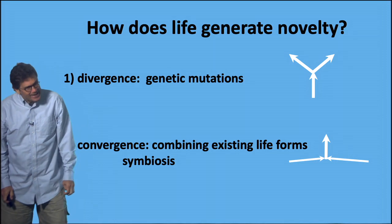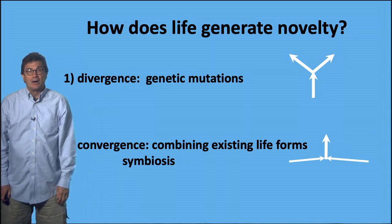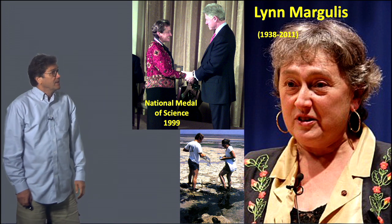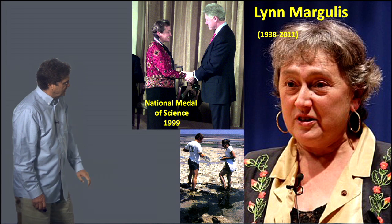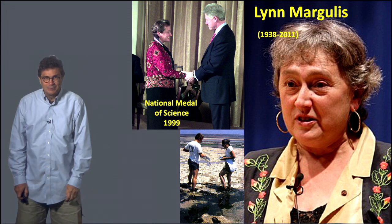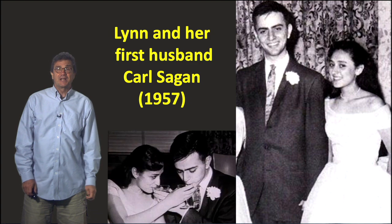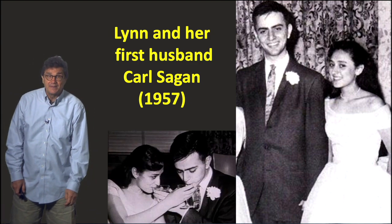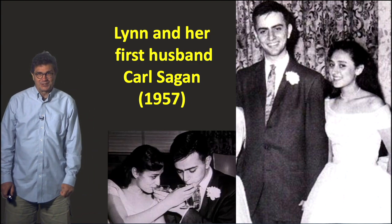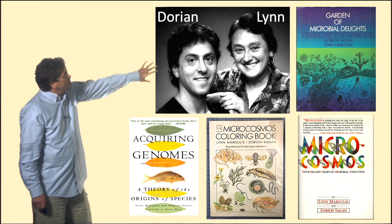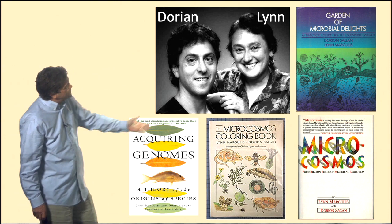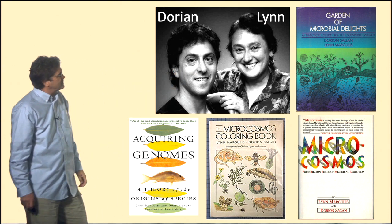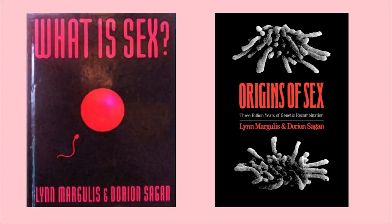You can't talk about endosymbiosis without thinking about Lynn Margulis. Lynn Margulis was a great scientist. Here she is getting the National Medal of Science in 1999, walking around a bacterial mat in Mexico, and getting married in 1957 to Carl Sagan, an astrobiologist. Here she is with her son Dorian, and they've written quite a few books together: Acquiring Genomes, the Garden of Microbial Delights, Microcosmos, and also What is Sex and the Origins of Sex.